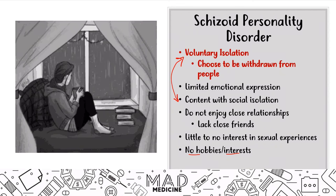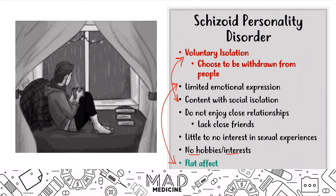Many autistic patients usually have something they're very interested in — they may be a savant, for example. Schizoid patients have no interest and no hobbies. They also have a very flat affect, consistent with limited emotional expression. On the USMLE, you may get a question about a patient who lives alone, doesn't come outside, doesn't talk to anyone, has no close friends — someone brings them food and they just say thank you. That's a clear giveaway for schizoid personality disorder.